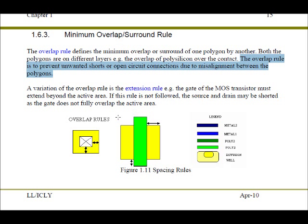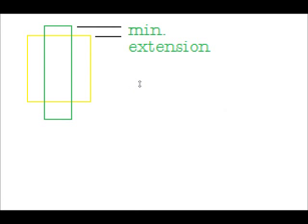A variation of the overlap rule is the extension rule. So let me explain the extension rule here. Here, you have green for polysilicon and the yellow box for diffusion.